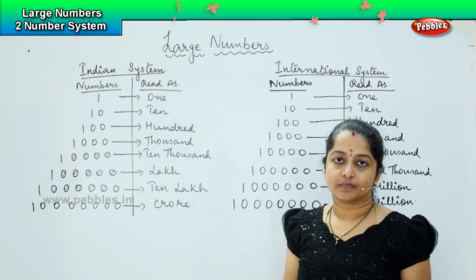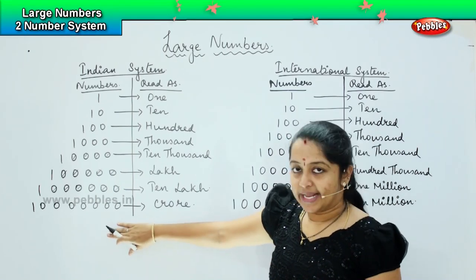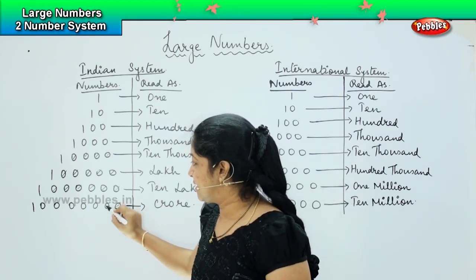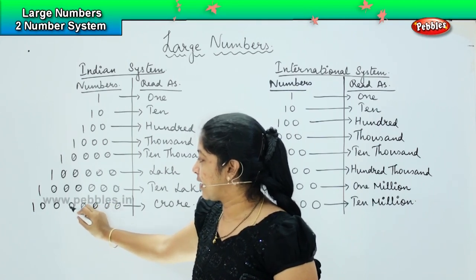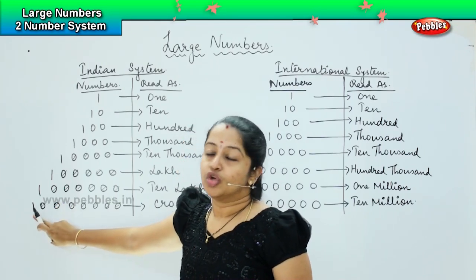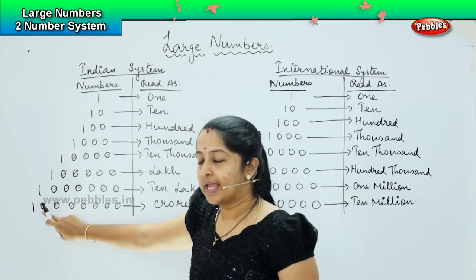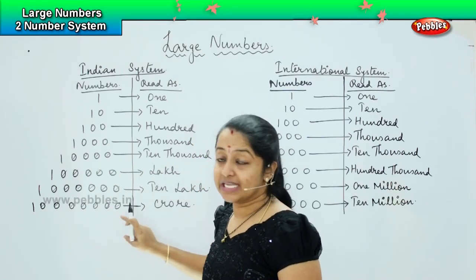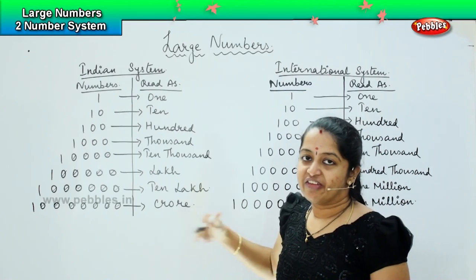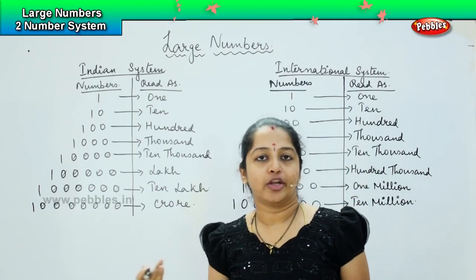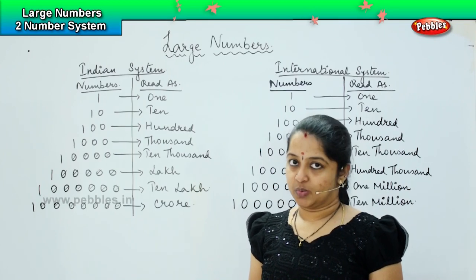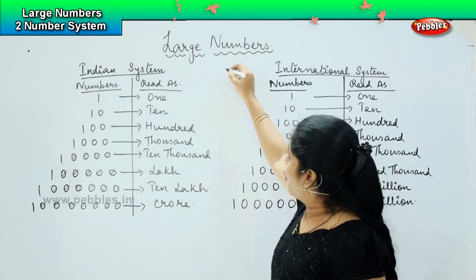So 1 followed by six 0s is 10 lakh, and 1 followed by seven 0s gives us 1 crore. Let us count: 1, 2, 3, 4, 5, 6, 7 — yes, 1 followed by seven 0s gives us 1 crore. You would have heard the terms '1 crore' and '1 lakh' quite often. Now you should know after 1, how many zeros come behind it to make that particular place value.